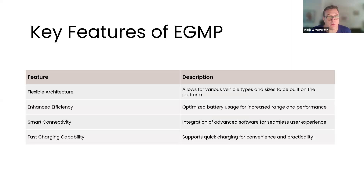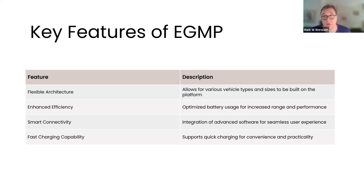The eGMP platform features flexible architecture, enhanced efficiency, smart connectivity, and fast charging. I own an EV6, so I'm a little biased — but it's got some of the fastest EV charging for DC fast charge in the industry: 350 kilowatts, rivaling the very best Teslas and the Porsche. Very few cars have 800-volt architecture and 350 kilowatt charging rates. eGMP has both — a budget vehicle that outperforms many much more expensive brands in the electric vehicle space.